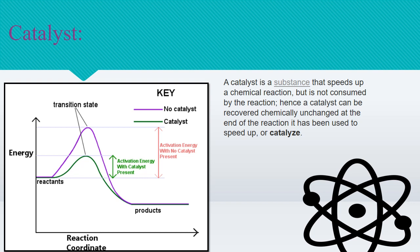Two graphs have been plotted — one in purple and another in green. The purple graph shows conversion of reactant to product without a catalyst. When we add a catalyst, you can see how it speeds up the reaction and within less time we obtain the required product. The activation energy with no catalyst present is quite high, whereas with a catalyst the activation energy is less.